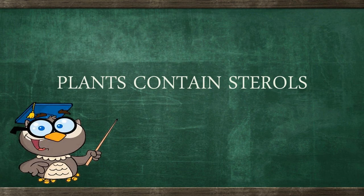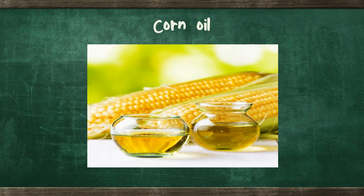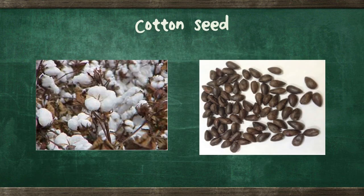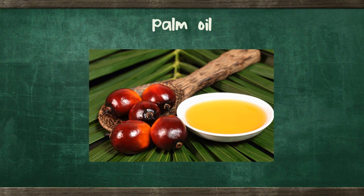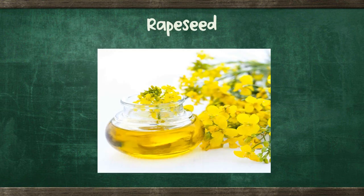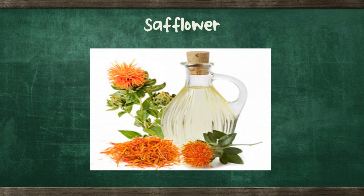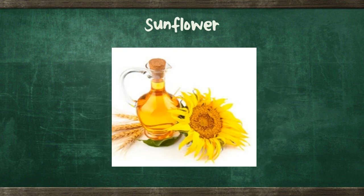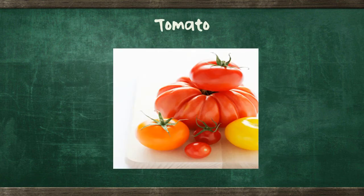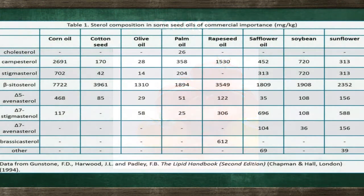Plants that contain sterols include corn oil, cottonseed, olive oil, palm oil, rice bran seed, safflower, soybean, sunflower, and tomato. The table shows sterol composition in some seed oils of commercial importance.